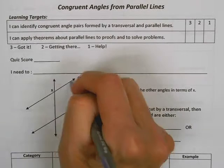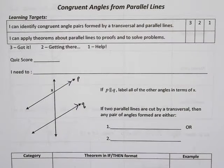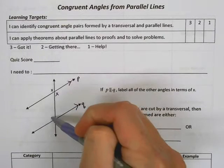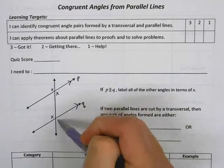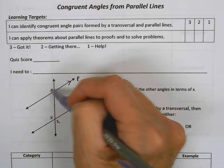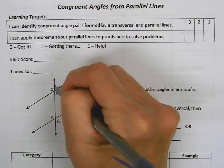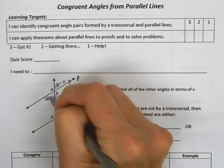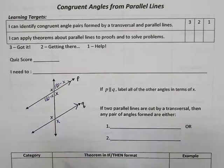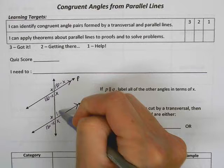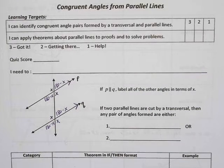Here I've given you two parallel lines and it says label all of the other angles in terms of X. Starting with vertical angles — these two would be corresponding, these two would be vertical, or these two would be corresponding. These are supplementary angles so if this is X this one must be 180 minus X, and then vertical angles make this 180 minus X, and corresponding makes this 180 minus X, and this would be vertical with it so it would also be 180 minus X.